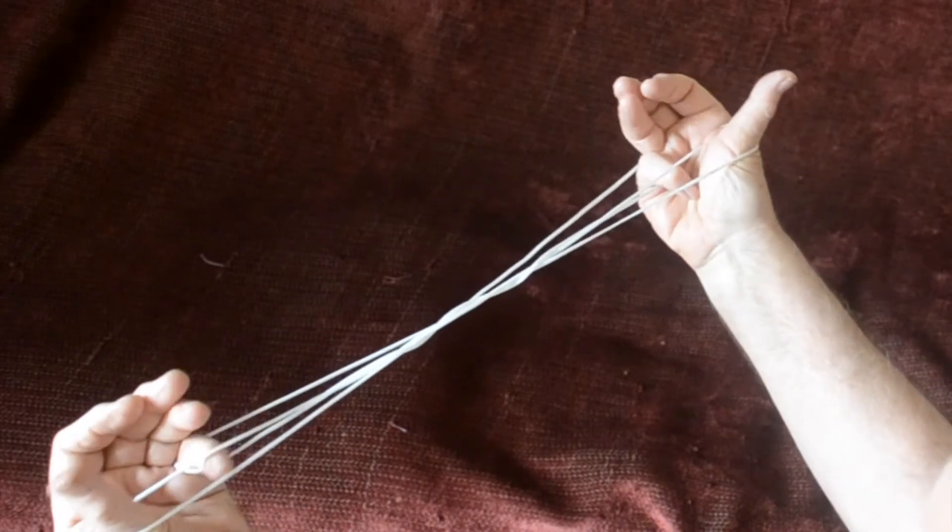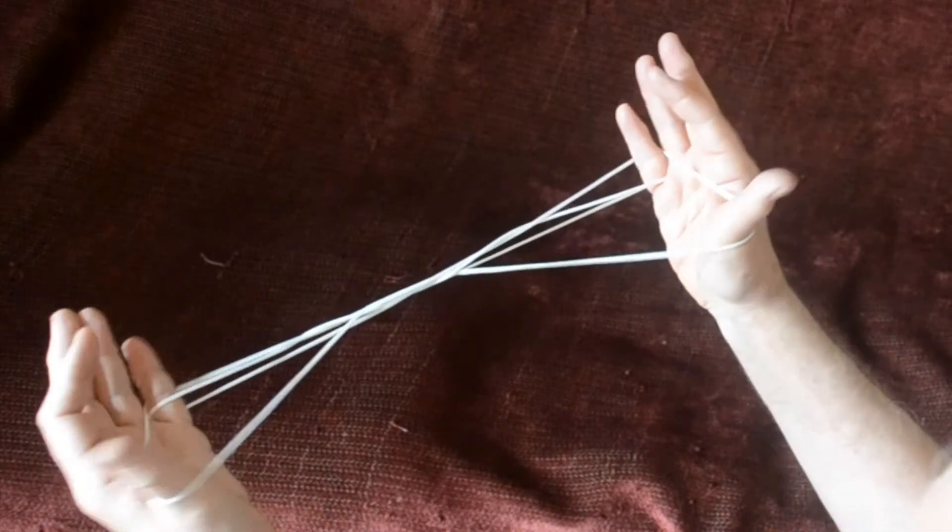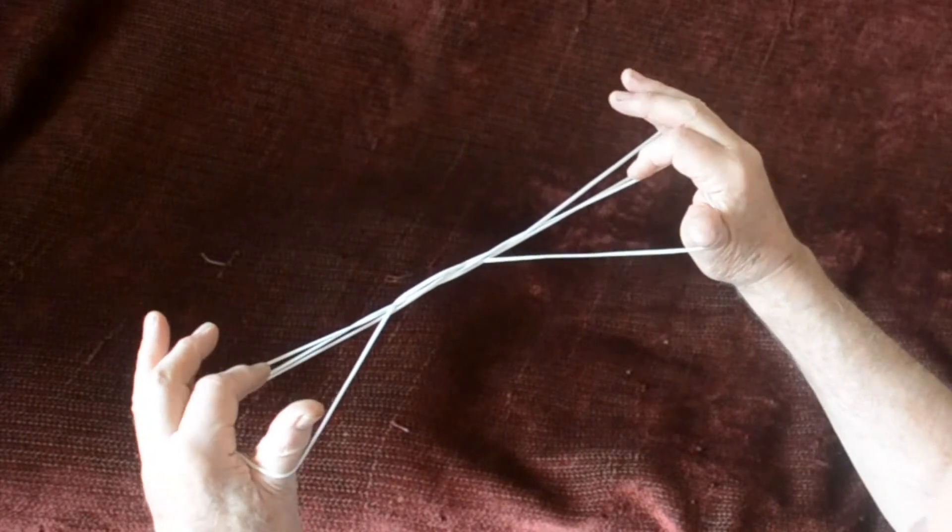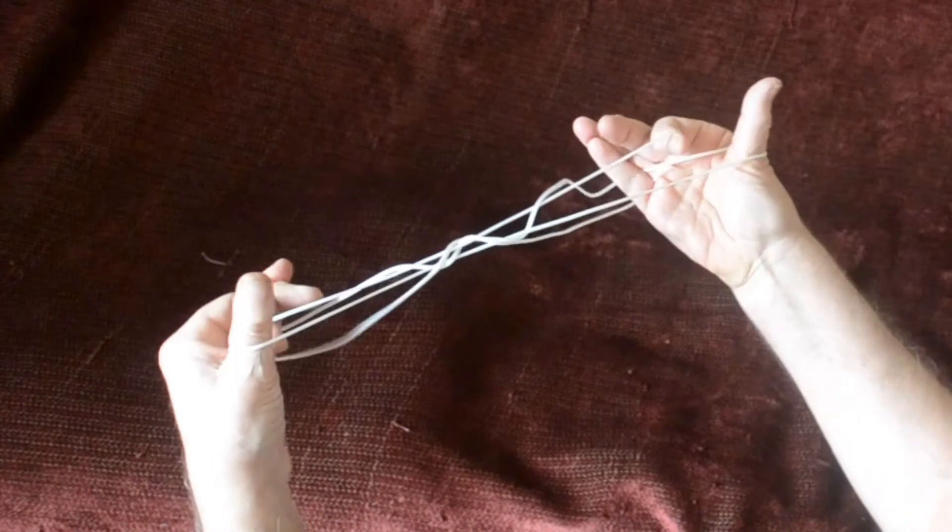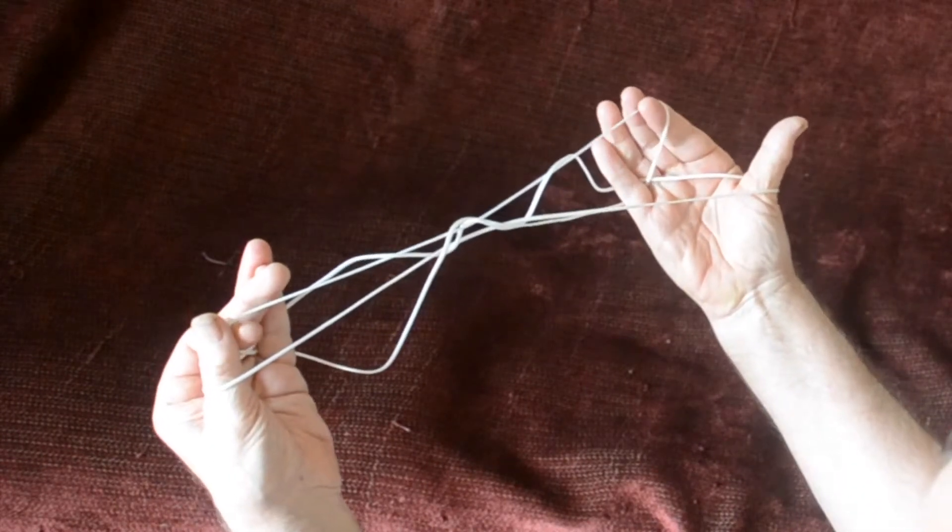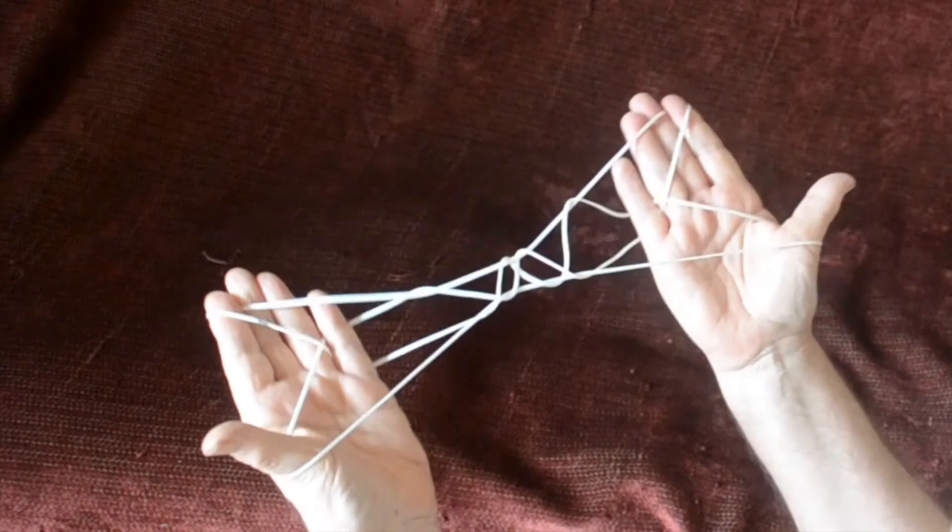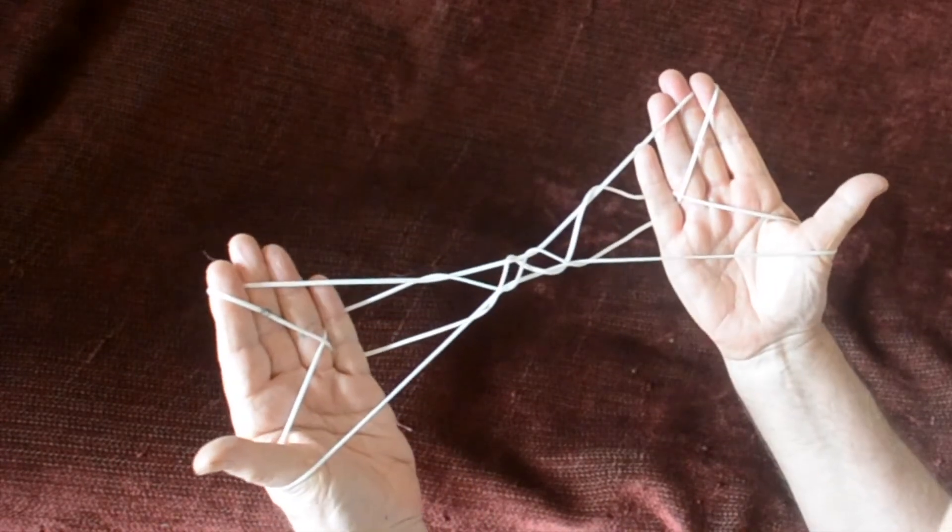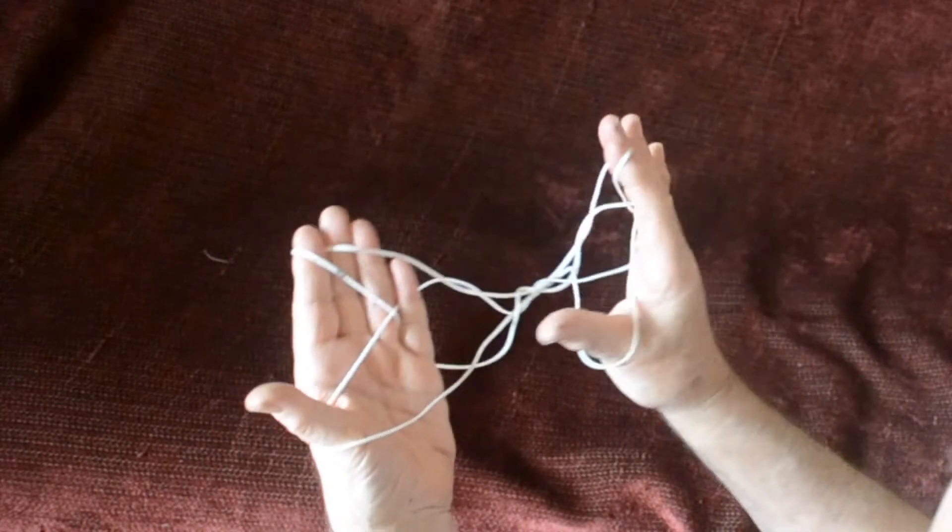Now, little fingers go into the thumb loops from below, pick up the far thumb strings. And the indices go from above into the little finger loop and pick up with a rotating movement the near little finger string. Catch it between the two fingers, hold tight and turn palms upwards and four diamonds should appear. This is a very interesting kind of reverse move to the Caroline extension, but comes every so often in the Papua New Guinea games.